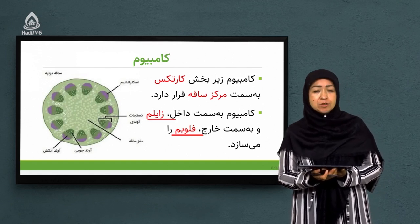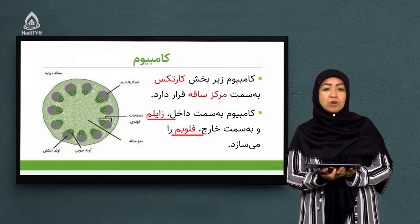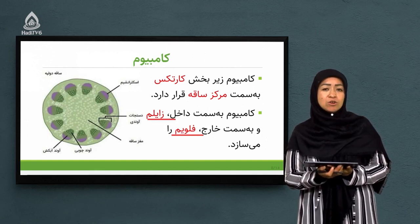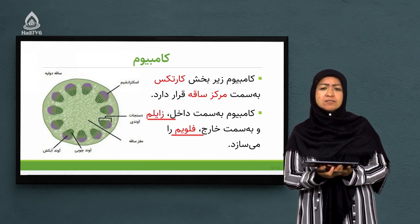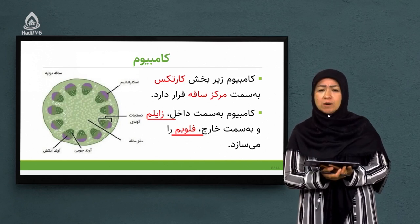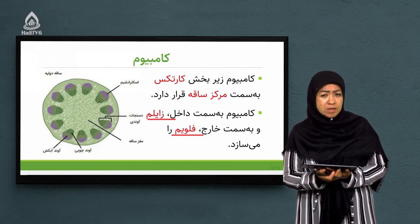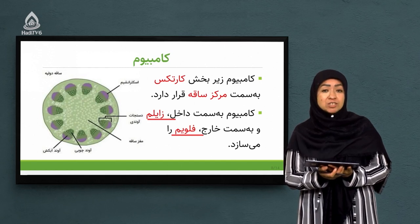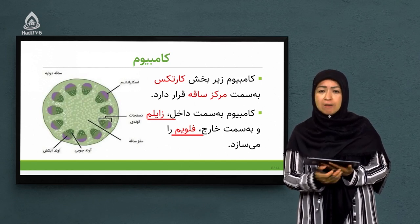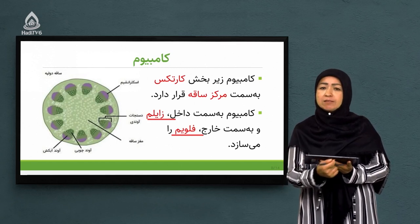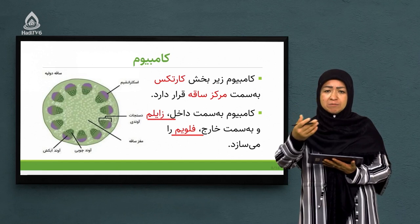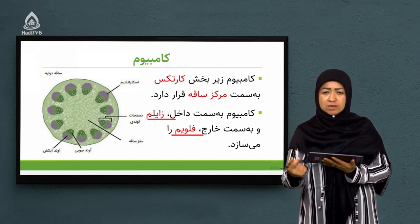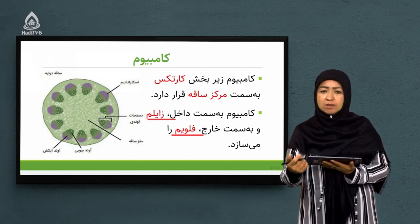به یاد دارید که در ابتدای بیولوژی سنف هفتم انساج نباتی را خواندیم: پارانشیم، اسکلرانشیم، کلانشیم که انساج اپیدرمی بودند. بعد انساج اساسی و پس از آن انساج انتقالی. انساج انتقالی شامل دو بخش زایلم و فلویم بود. زایلم همان بخشی بود که توسط ریشه آب و مواد معدنی از خاک جذب می‌شد، به زایلم داده می‌شد، از ریشه به ساقه منتقل می‌شد و به برگ می‌رسید تا فتوسنتز انجام شود.